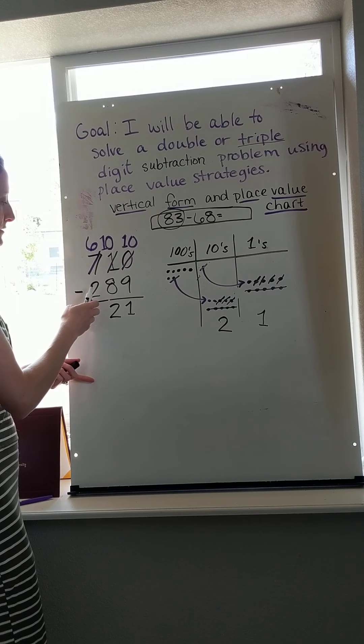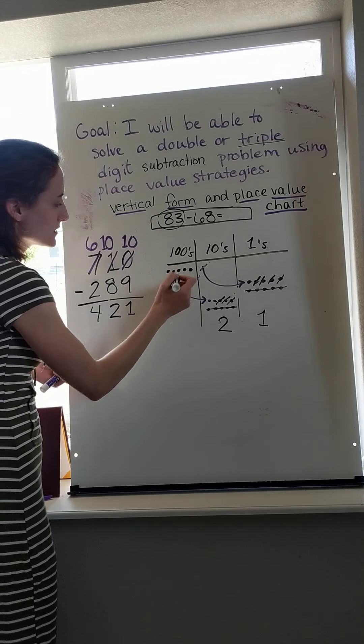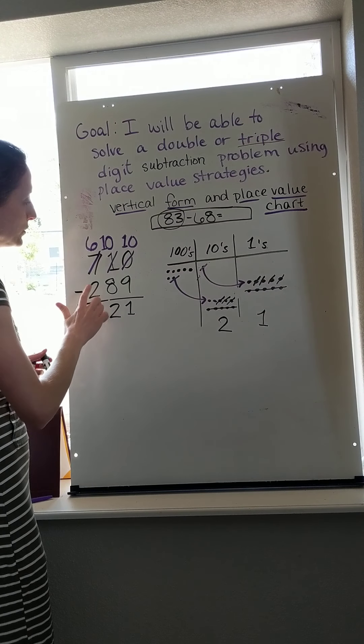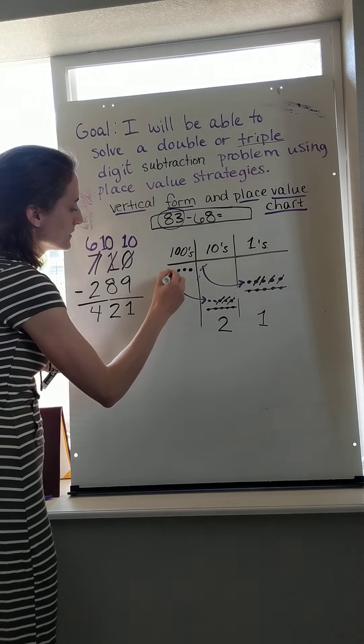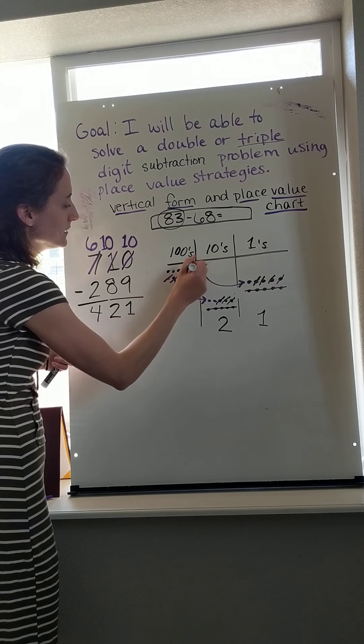Then I go 6 minus 2. Well, 2 and 4 more make 6. So let's cross out 2 of my hundreds: that one doesn't count, that one was already unbundled - 1, 2. There's 4 hundreds left. Yes, my two match.